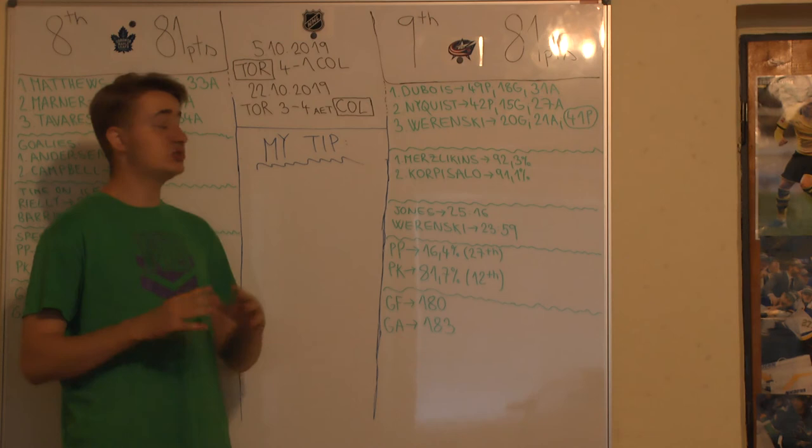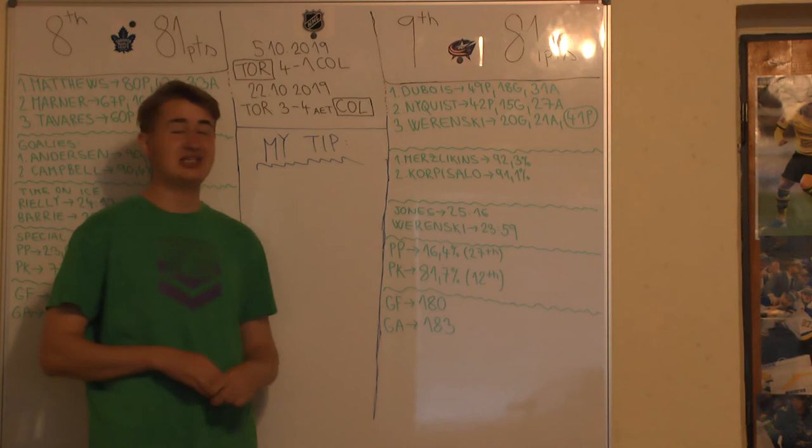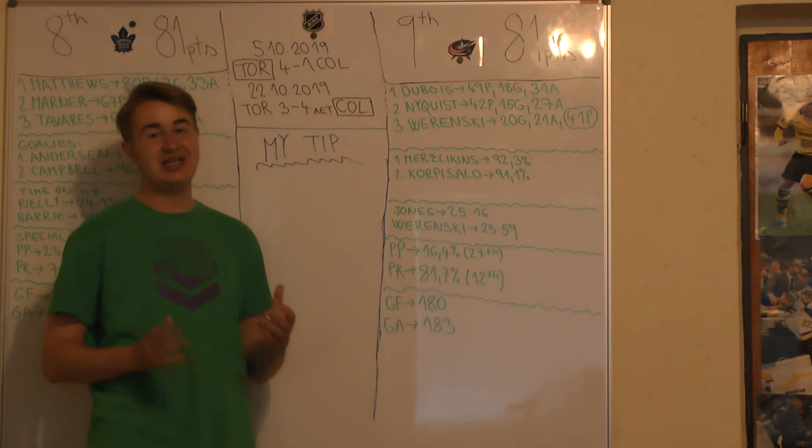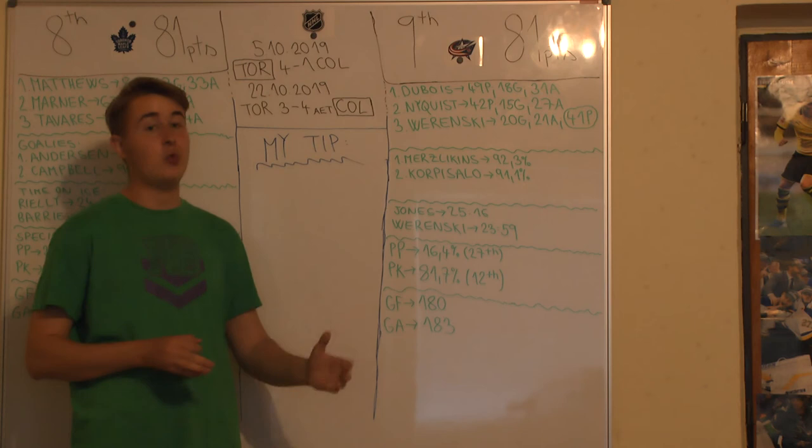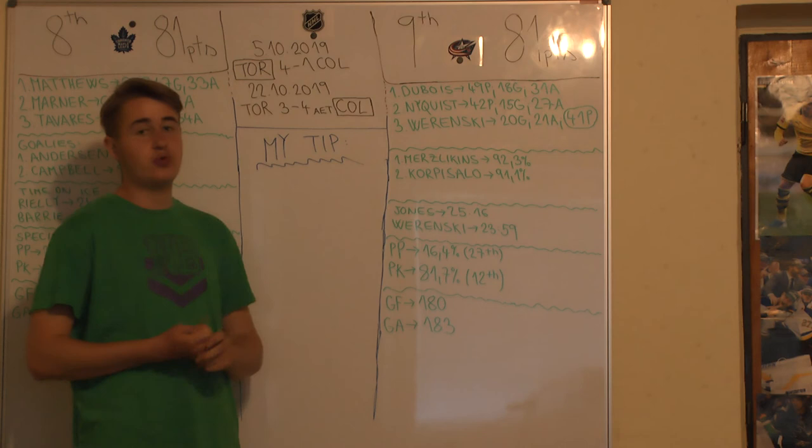When we look at power play percentage, as I have said earlier, it's not the best, 16.4%, 27th in the league. However, penalty kill is a little bit better, or actually a lot better, 81.7%, 12th in the league. So that's pretty good but they have to improve their power play when they want to be successful against the Toronto Maple Leafs. Goals for, according to Columbus, 180, goals against 183.